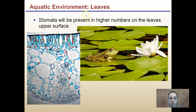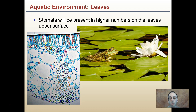Aquatic environment leaves are an interesting case. The stomata will be present in higher numbers on the leaf's upper surface. These lily pads, because they're floating in water, wouldn't be able to breathe if stomata were on the underside. So they have a higher percentage of stomata on the upper side, which is not characteristic of most other plants. The underside is submerged in water, so stomata are placed on top for more efficient gas exchange.